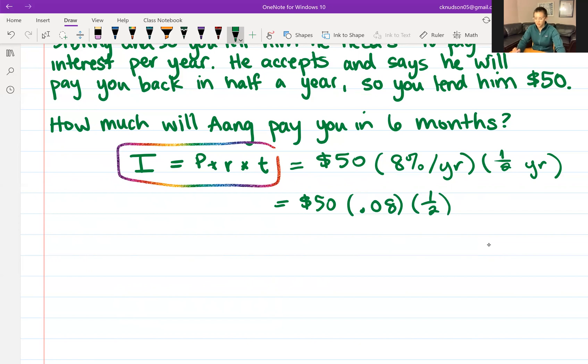So here we've got $50 times 0.08 times a half. Let's simplify this a little bit more. Half of 0.08 is 0.04. So $50 times 4 out of 100. This gives us 200 up top, 100 in the denominator. So he will pay you $2 in interest.